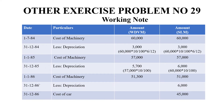In this method — return on value method — we will calculate Rs. 57,000 at 10%. The original cost is Rs. 60,000 into 10 by 100. The cost of machinery is Rs. 51,300 under the return on value method. The straight line method gives Rs. 51,000.